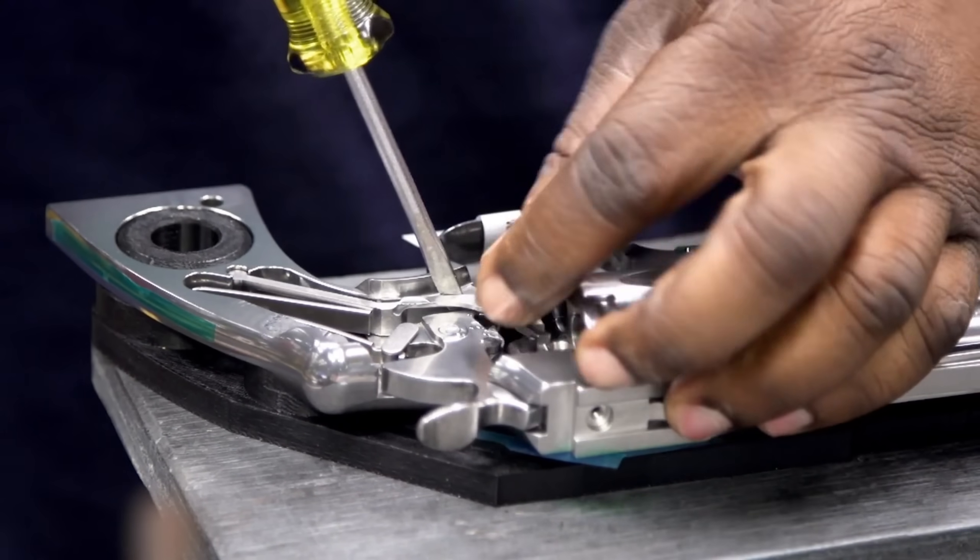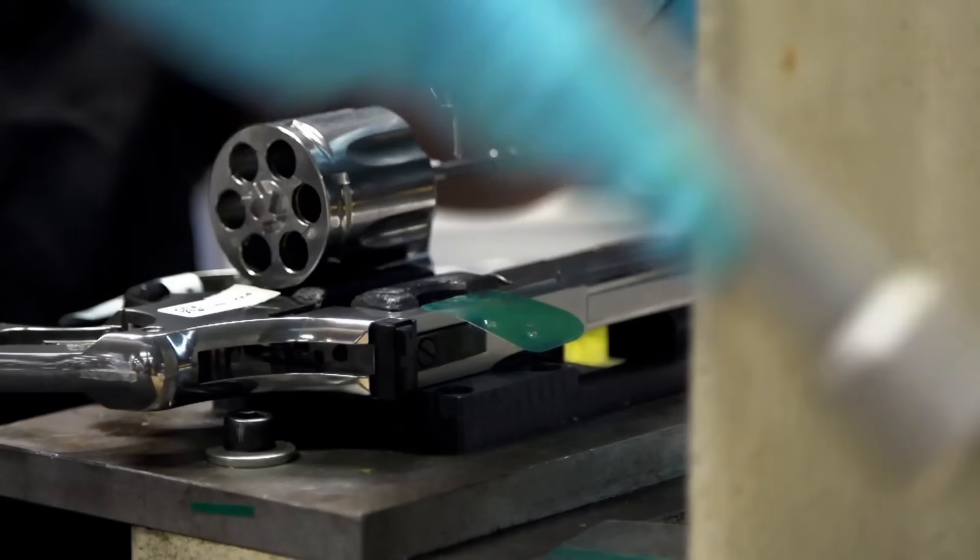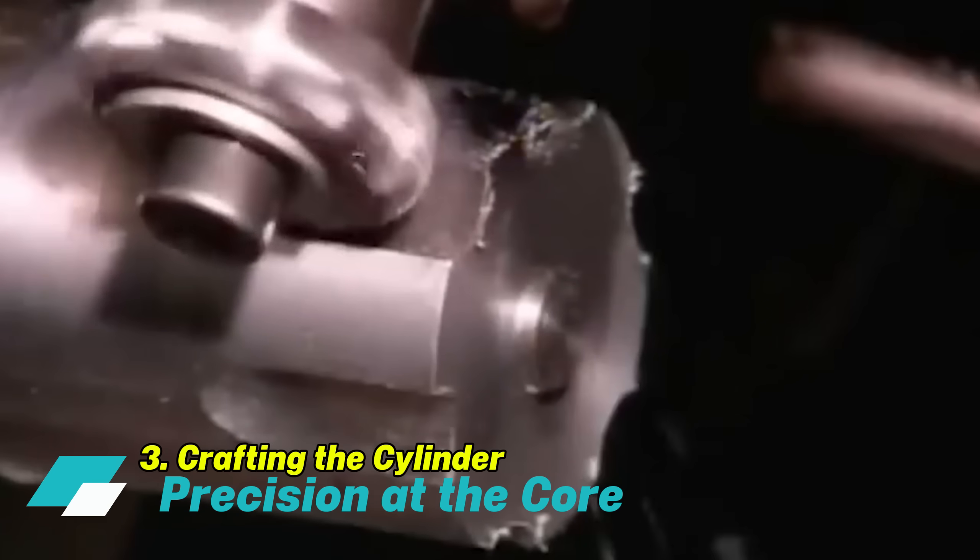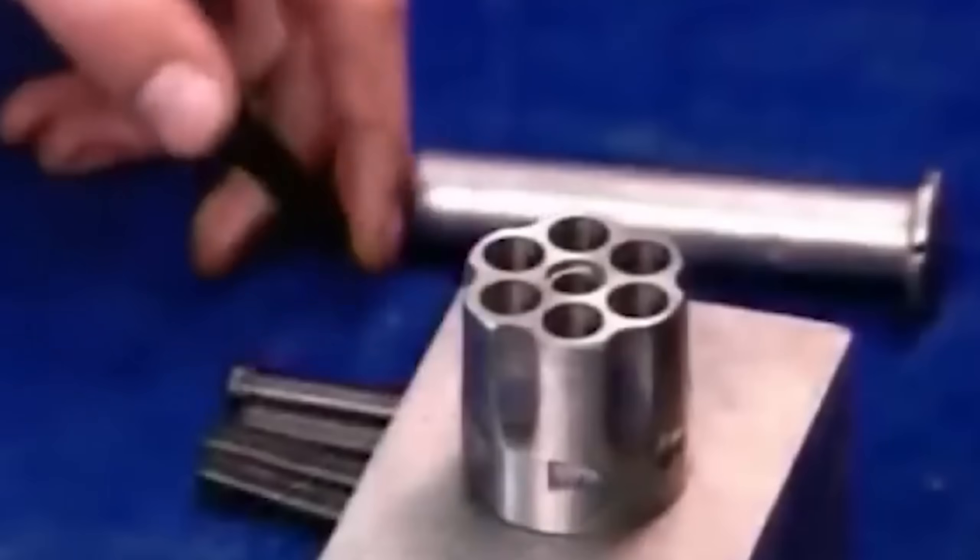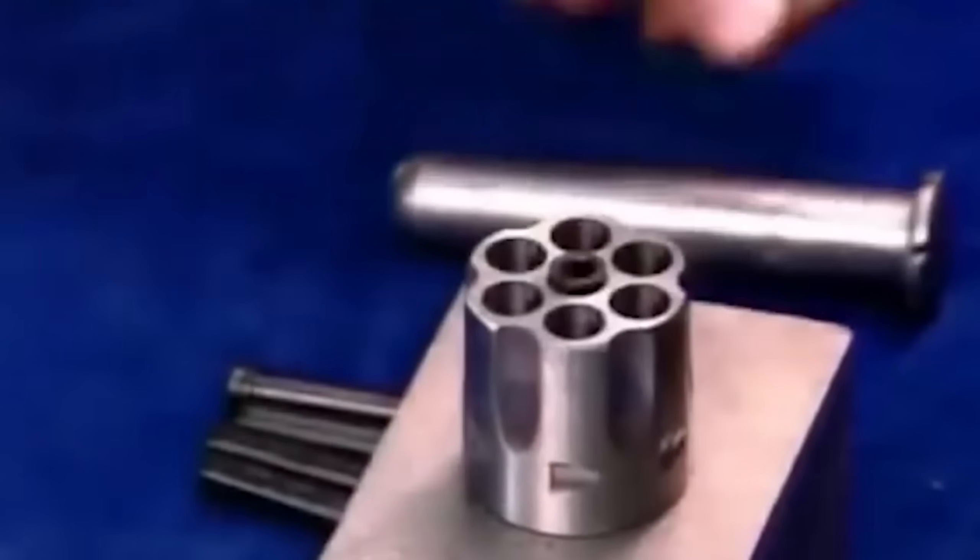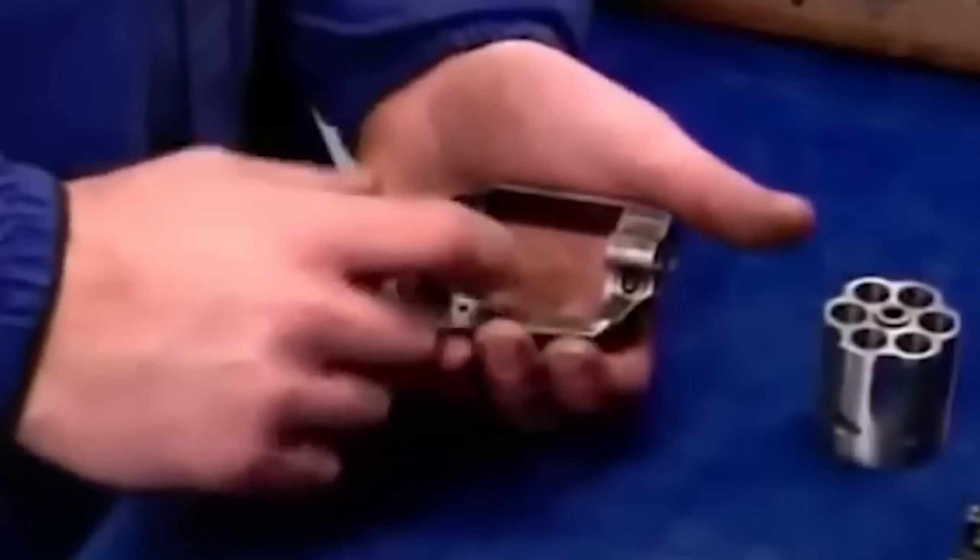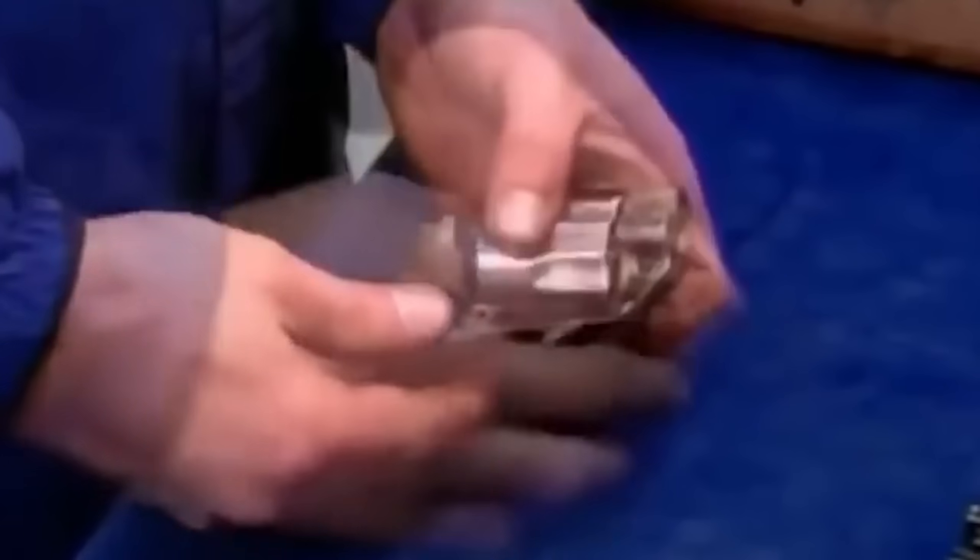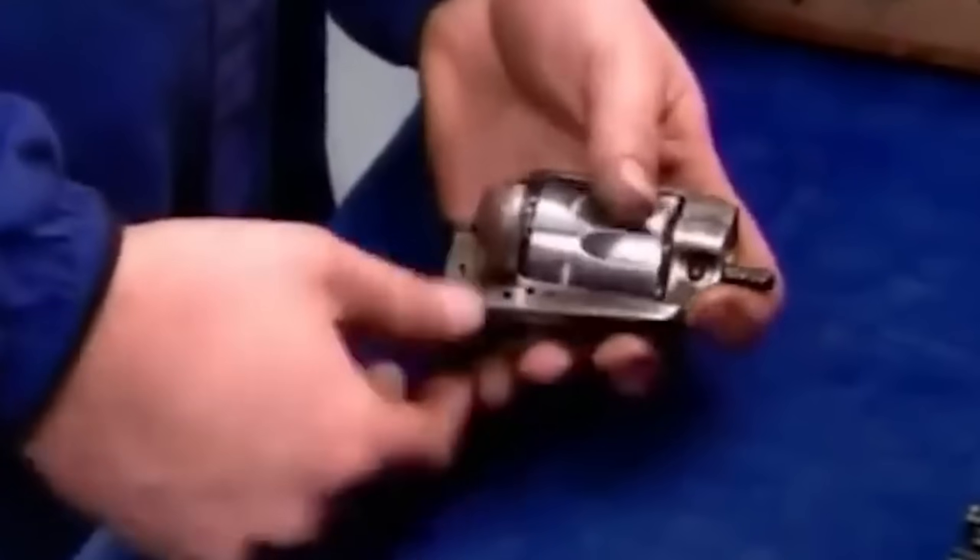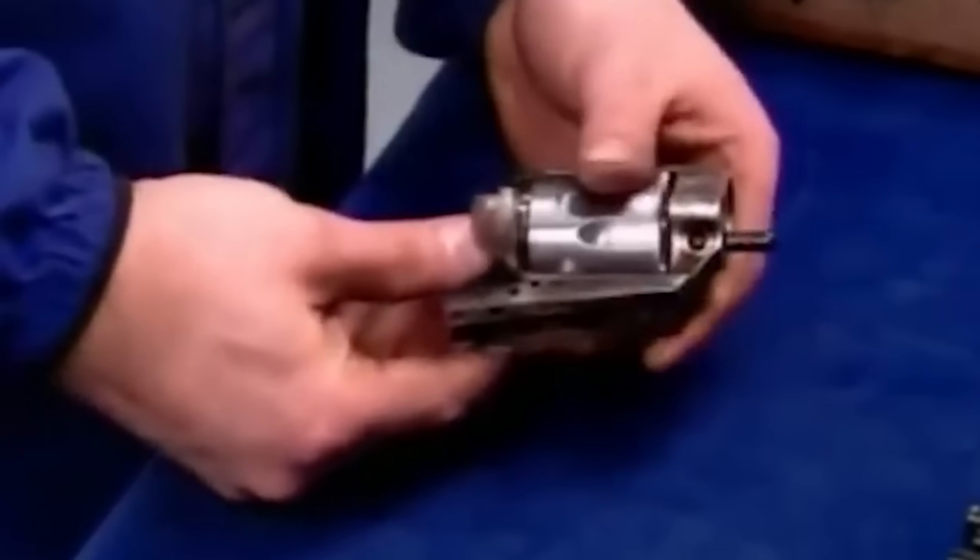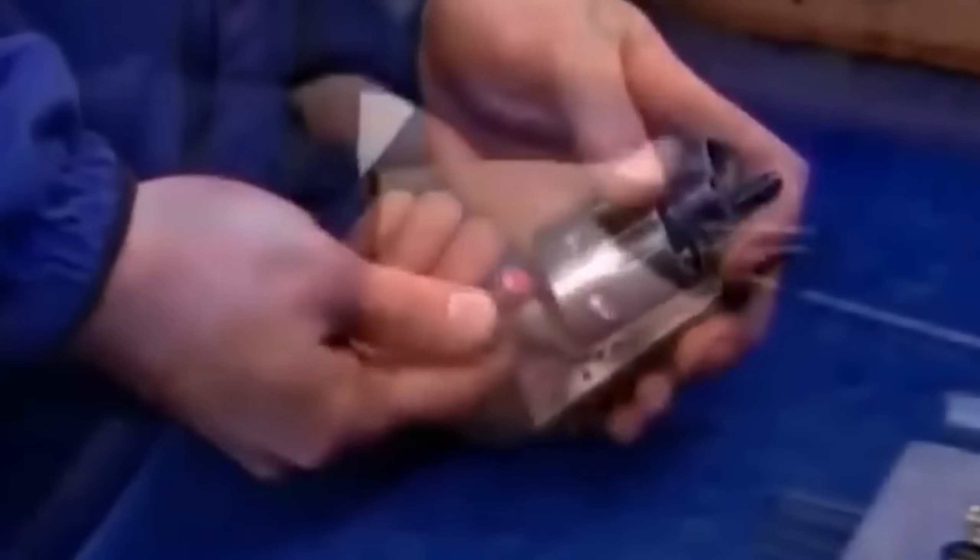With the frame now machined and heat treated, we move on to crafting the revolver's most critical rotating component: the cylinder. Crafting the cylinder demands a level of precision that sets the standard for the rest of the revolver. The process begins with a cylinder blank, chosen for its consistent alloy composition and ability to withstand repeated firing stresses. Each blank is carefully inspected for internal flaws or surface defects that could compromise performance. Only those that meet strict standards move forward.